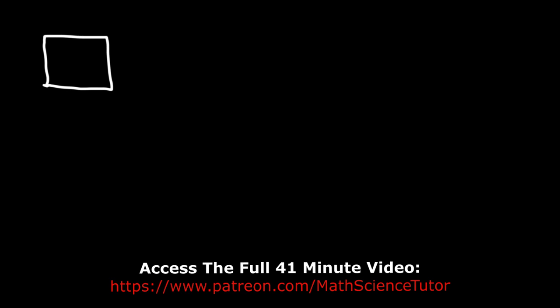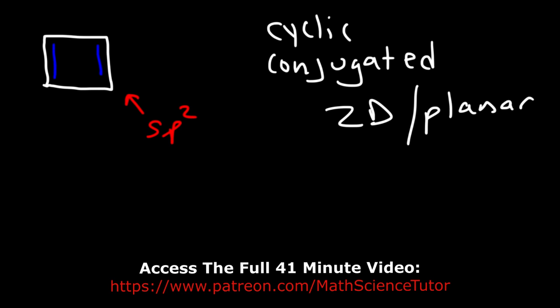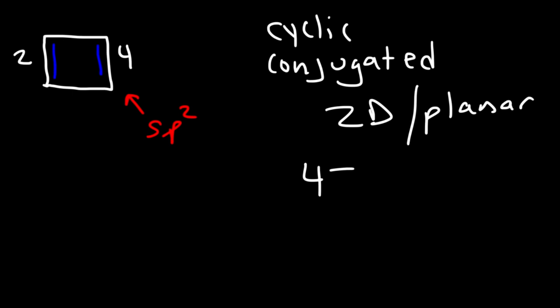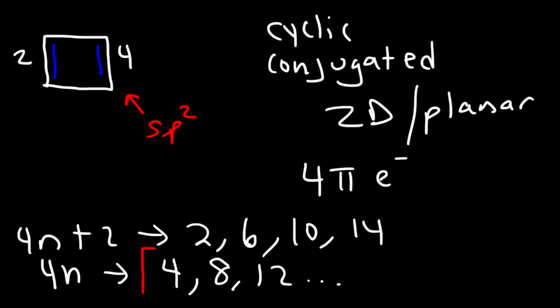What about cyclobutadiene? Is it aromatic, anti-aromatic, or non-aromatic? This molecule is cyclic, conjugated — we have alternating single and double bonds — every carbon atom has a p-orbital because all carbon atoms are sp2 hybridized, and it's planar with a 2D structure. Now let's count the pi electrons: 2 and 4 — it has 4 pi electrons. This doesn't follow Hückel's rule of 4n+2 for aromatic compounds. Rather, it follows the rule for anti-aromatic compounds, which gives the numbers 4, 8, 12. So cyclobutadiene is anti-aromatic, meaning it is not stable.